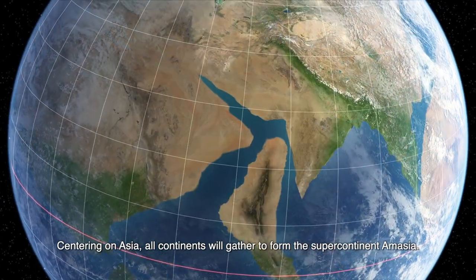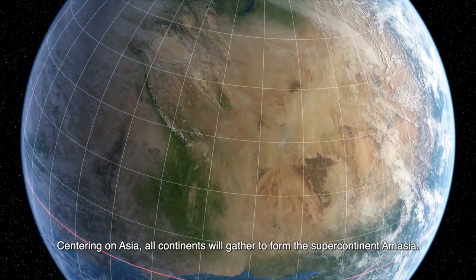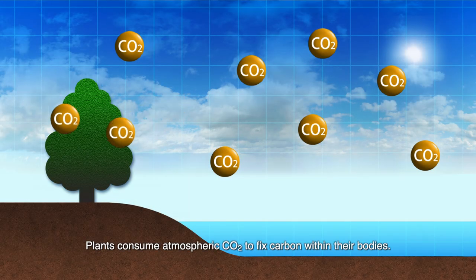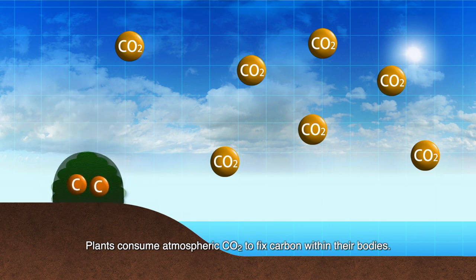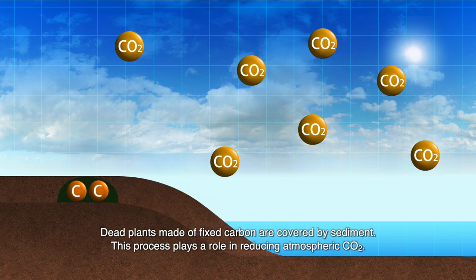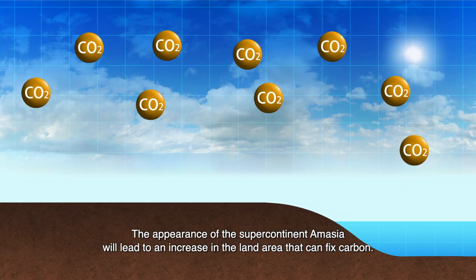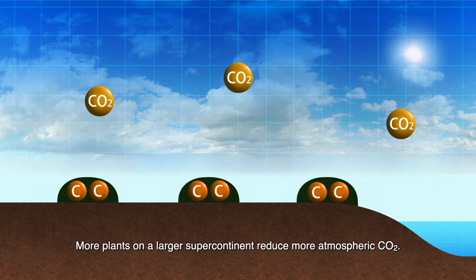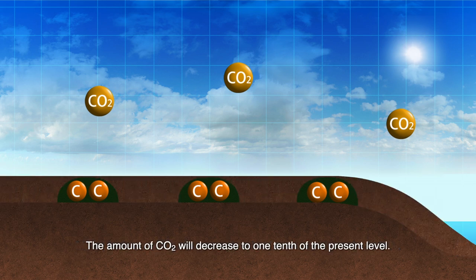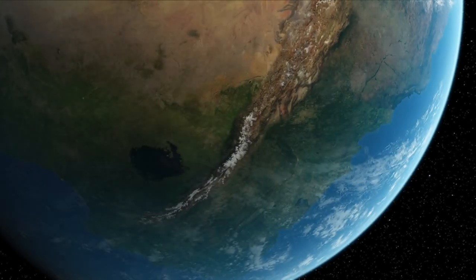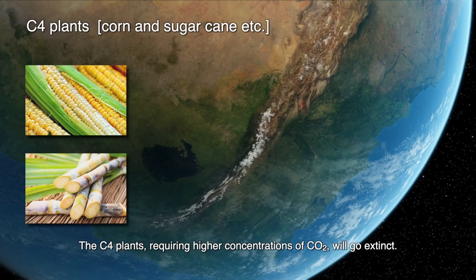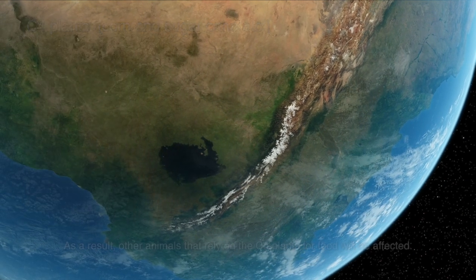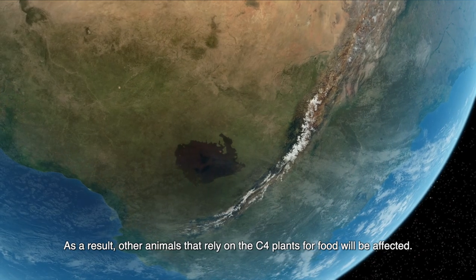Centering on Asia, all continents will gather to form the supercontinent Amasia. Plants consume atmospheric CO2 to fix carbon in their bodies; dead plants made of fixed carbon are covered by sediment, reducing atmospheric CO2. The appearance of the supercontinent Amasia will lead to an increase in the land area that can fix carbon. The amount of CO2 will decrease to one-tenth of the present level. The C4 plants, requiring higher concentrations of CO2, will go extinct. As a result, other animals that rely on C4 plants for food will be affected.